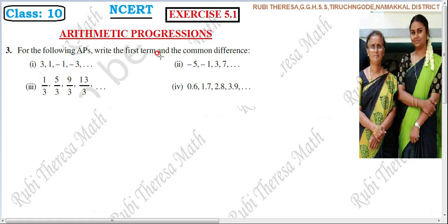They have given a sequence; we have to take and write the first term and the common difference. The first term we will note, and if we follow the common difference, we will note the common difference. The common difference is represented by the letter D.